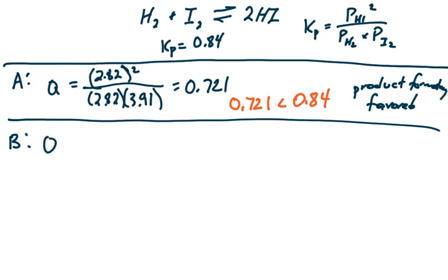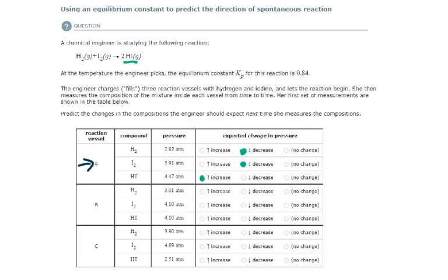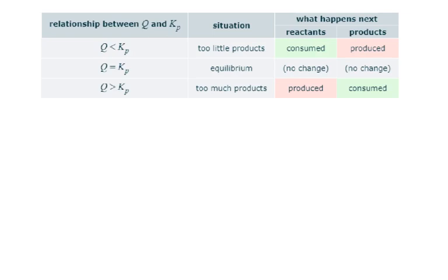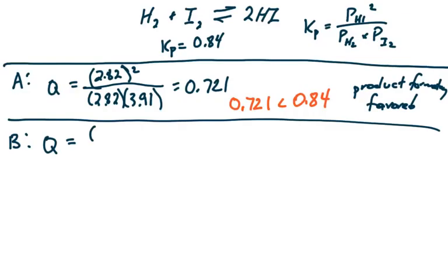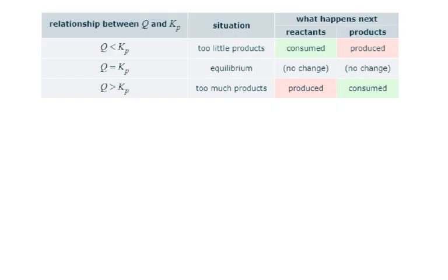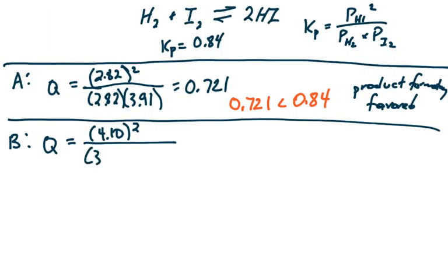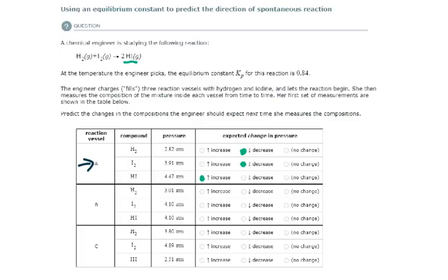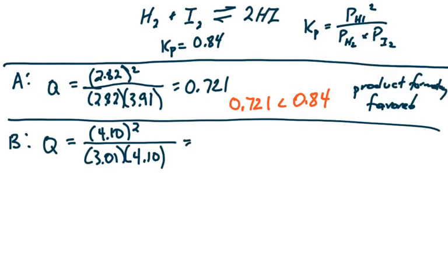For B, the concentration of our product is 4.1. Well, I should say partial pressure. It's measured here in ATMs, not molar concentration. H2 is 3.01 and I2 is 4.1. Let's double check that. Okay. So let's see what we get for Q here.